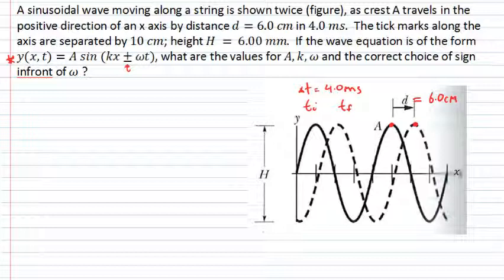We're also given a numerical value for the height, which is 6 millimeters. That's how far the string oscillations are extending. We're given the wave equation y(x,t) equals A sin(kx plus or minus omega t). We're told that this equation can describe this wave.